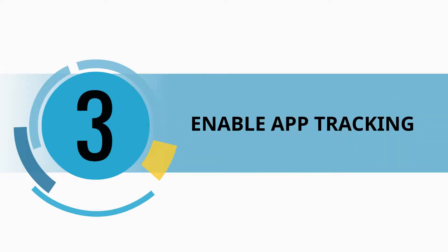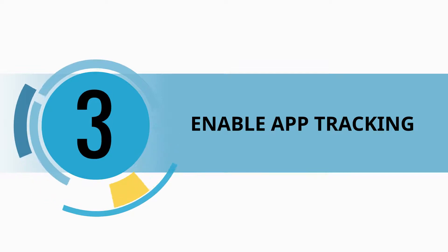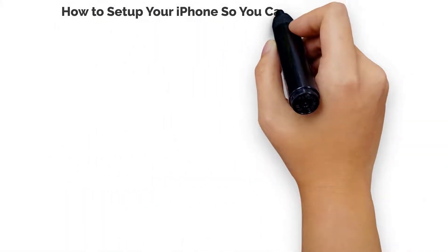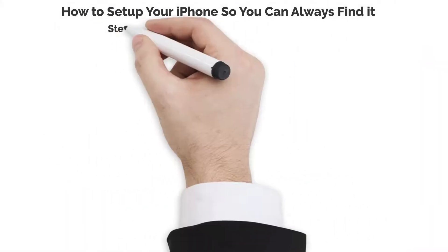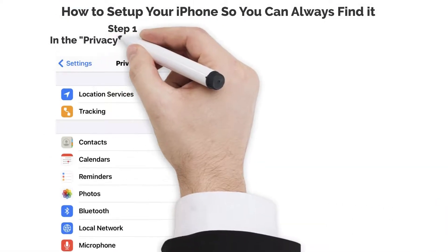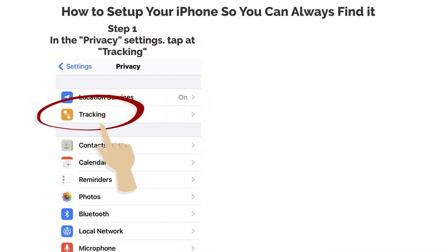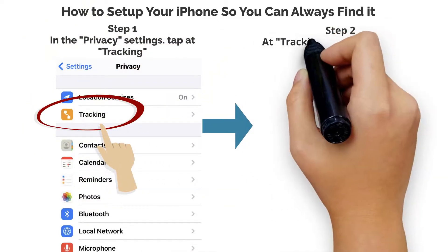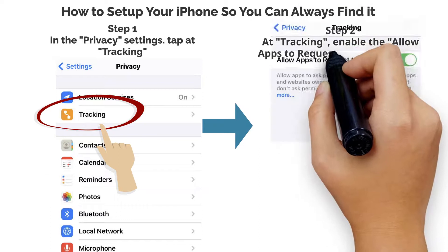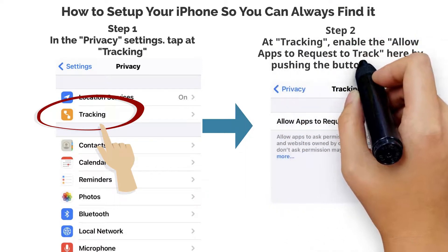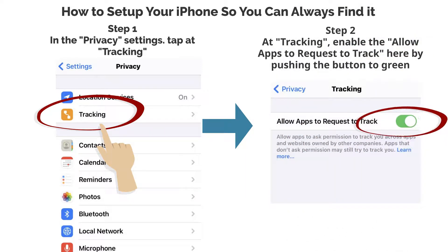Step 4: Enable App Tracking. Step 1: In the Privacy settings, tap on Tracking. Step 2: At Tracking, enable 'Allow Apps to Request to Track' by pushing the button to green.